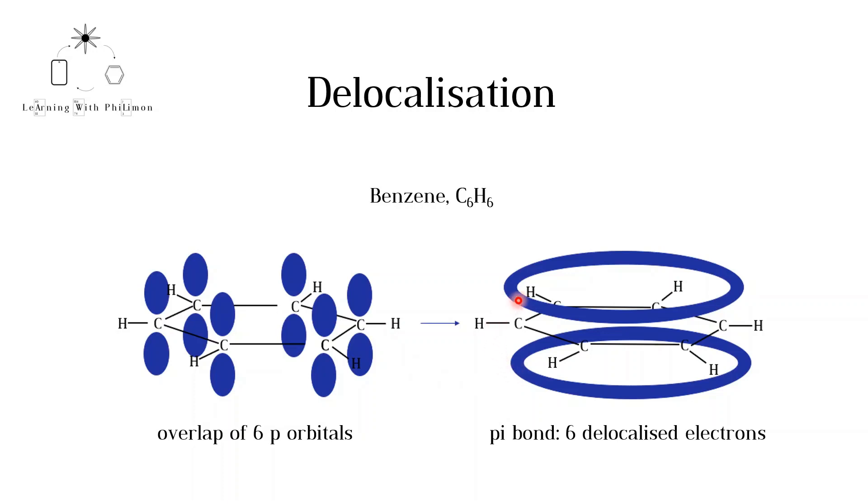The overlap of p orbitals allows for the delocalization of electrons in other molecules where resonance is possible.